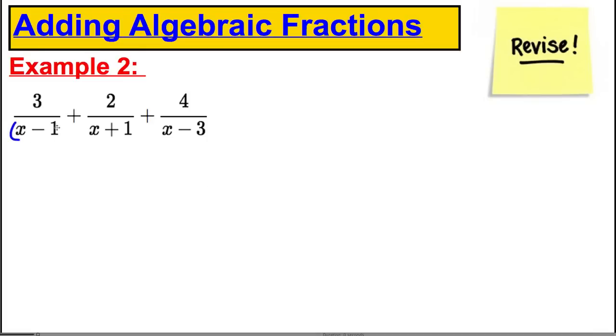Now, first thing I do, put a bracket around everything, then I would decide what common denominator I need in order to add these fractions. Well, the product of these three denominators will work out perfectly for us. That's the lowest common multiple of these factors.